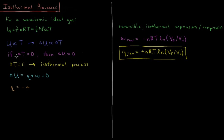For an isothermal process, our temperature doesn't change for an ideal gas. If the temperature doesn't change, then the internal energy doesn't change. The internal energy change of a closed system is equal to the heat plus the work that occurs during that process, which we've now said is equal to zero. So the heat that occurs during an isothermal process is equal to the negative work.